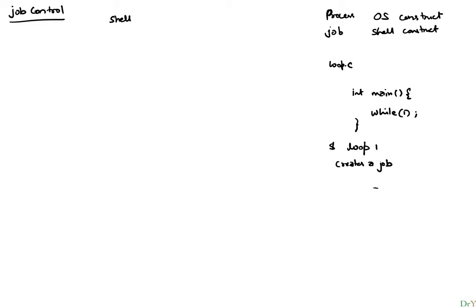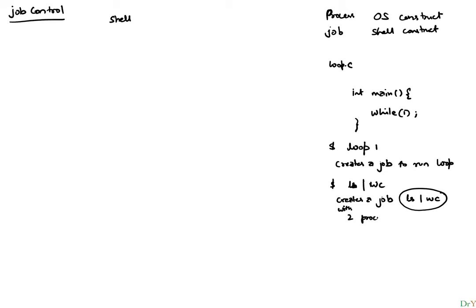You might say, how is that different from a process? Let's go one step further. Say I ran a command like ls piped to wc — I'm getting a listing and piping it to wc. What the operating system actually does is it creates a job for this entire string that I typed in: ls pipe wc. This is a job, but this job has two processes in it — an ls process and a wc process.